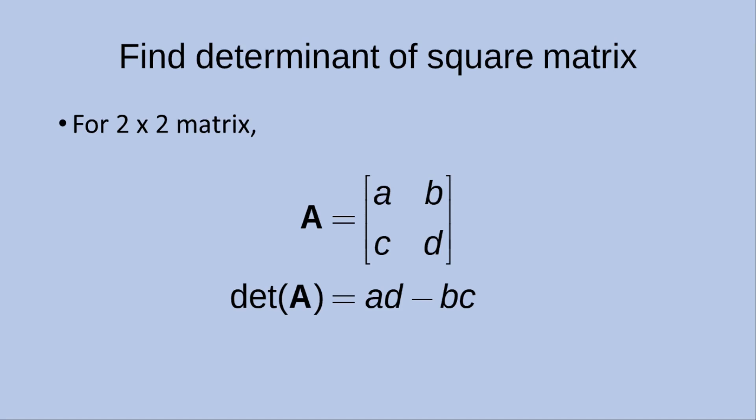We know that for a 2x2 matrix given by A equals A, B, C, D being the elements, the determinant of A is equal to A·D minus B·C. We just take the diagonal elements, do the multiplication of those diagonal elements, and then do the subtraction.